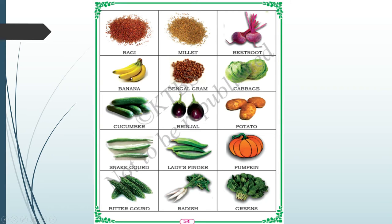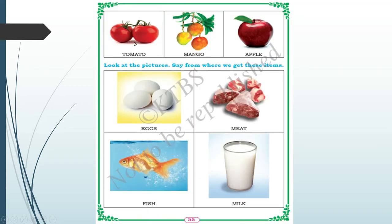Beetroot, banana, bengal gram, cabbage, cucumber, brinjal, potato, snake guard, lady's finger, pumpkin, bitter guard, radish, greens, tomato, mango, apple. All these grains, vegetables and fruits are obtained from plants.